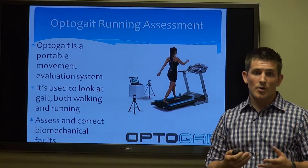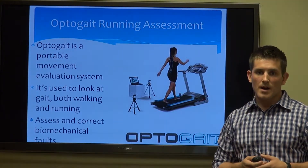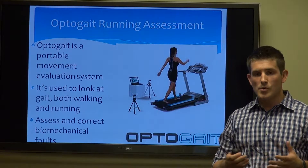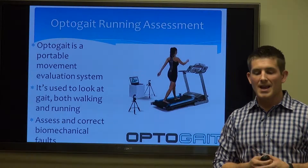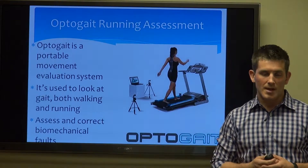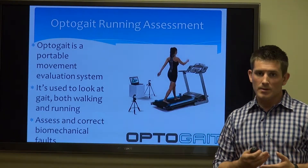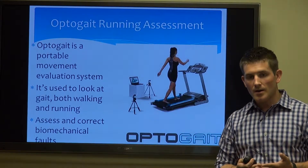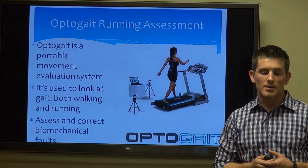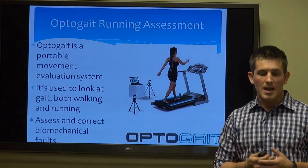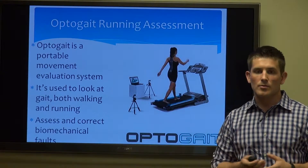The first way we would assess your running or walking gait is with our OptiGait running assessment. The OptiGait is a state-of-the-art computer-based system that watches the way you move. There are different parameters we can implement to focus on different individuals — an athlete may have a very different test than a geriatric or elderly woman. It's a portable system, so we can put it on a treadmill or a flat surface, and change up surfaces to see how you move based on different conditions. It's used to look at both walking and running gait, and we'll be able to assess and correct your biomechanical faults based on what we find through testing.